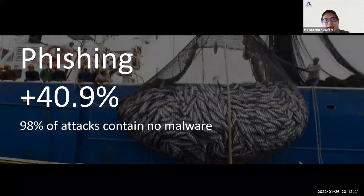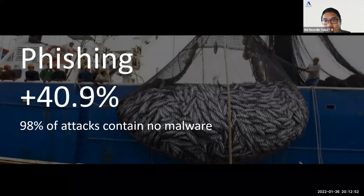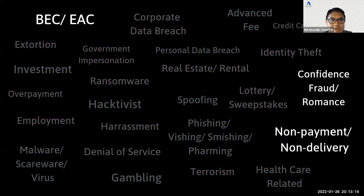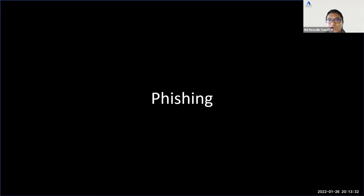Phishing is the number one attack vector, having grown by 40.9% in recent years. Notably, 98% of attacks contain no malware — when you click the link it simply brings you to a phishing site where you enter confidential information, just like the OCBC scam. The top three most common attacks are business email compromise or email account compromise, confidence and romance fraud, and non-payment or non-delivery of items.